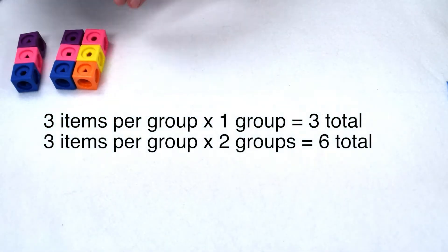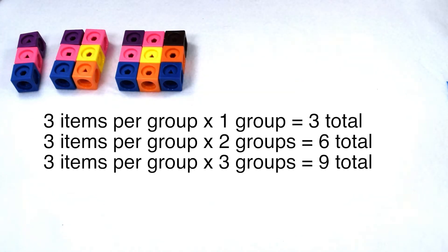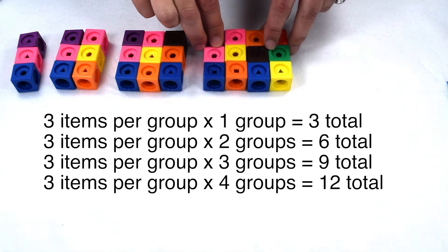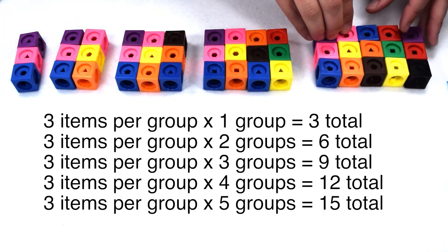Three items per group times two groups gives me six, so our next multiple of three would be six. Continuing on, three items per group times three groups gives us nine for our next multiple. Three times four gives us twelve. Three times five gives us fifteen.